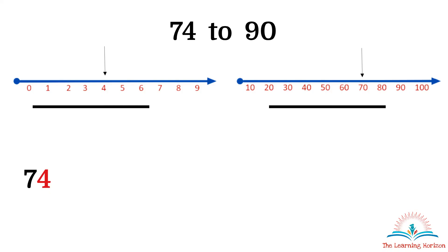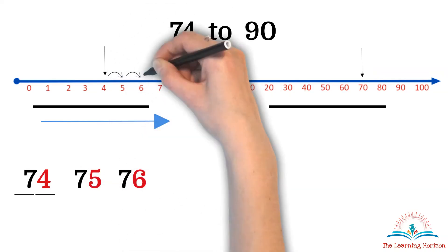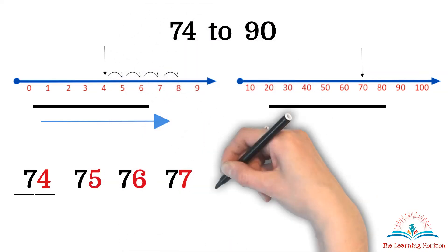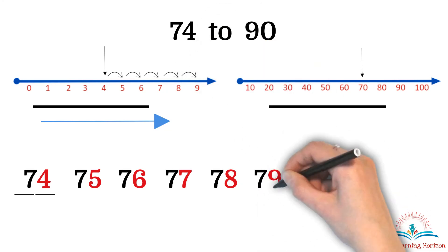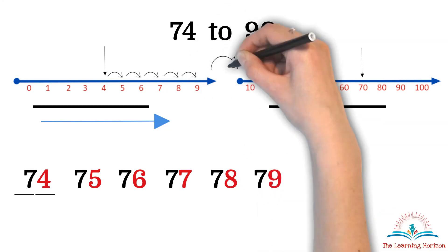As discussed earlier, we look at this place that is 1's place. So we have 4 here. We will count on in the same order and this place that is 10's place remains same. That is 75, 76, 77, 78, 79. No digits after 9. Move on to the next 10. That is 80.